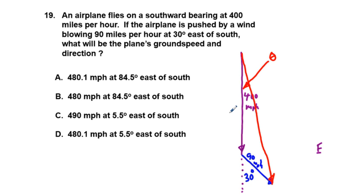We can already eliminate possibilities. We're blowing this direction, we're going to have just a slight adjustment east to south. We're not going to be way over at 84.5 degrees east of south. We're going to have answer either C or D, so A and B reveal themselves as impossibilities at this point.